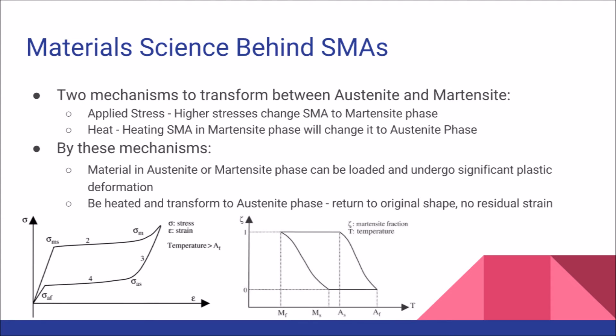There are two mechanisms by which a shape memory alloy will transform between the austenite and martensite phases. The first is applied stress: when an SMA is maintained in the austenite phase and an external stress is applied above a certain threshold, the material will begin to exist in the martensite phase, returning to austenite when stress is removed, even beyond the elastic limit. The second mechanism is temperature change — by heating an alloy in the martensite phase above the transition temperature, it will change to the austenite phase, and vice versa.